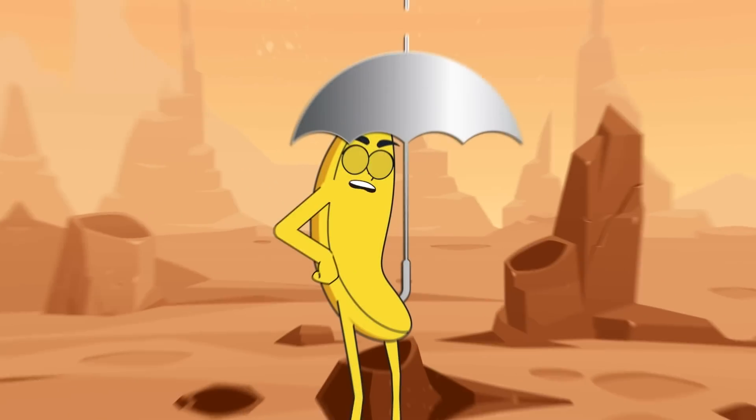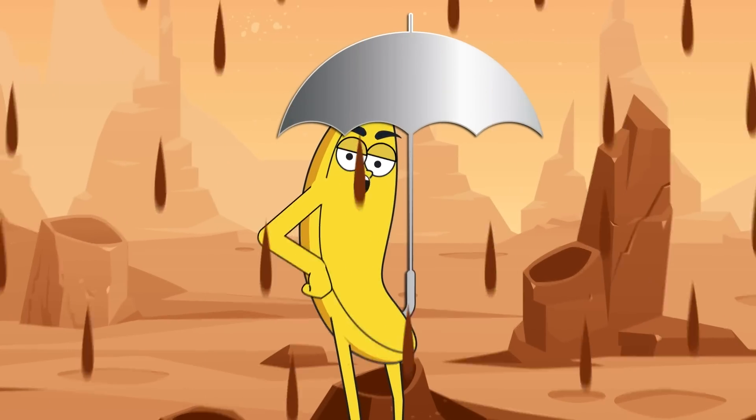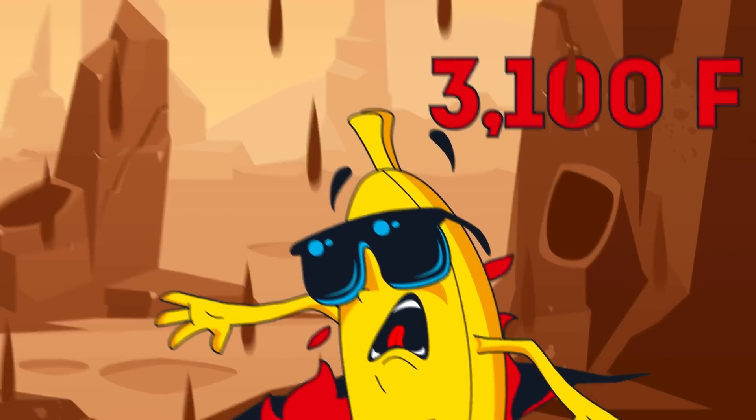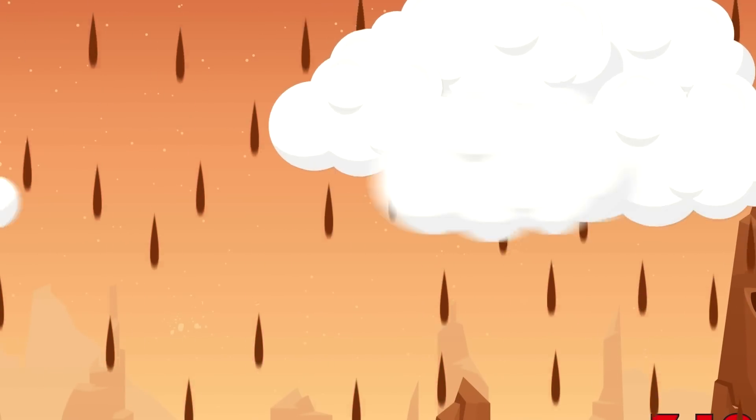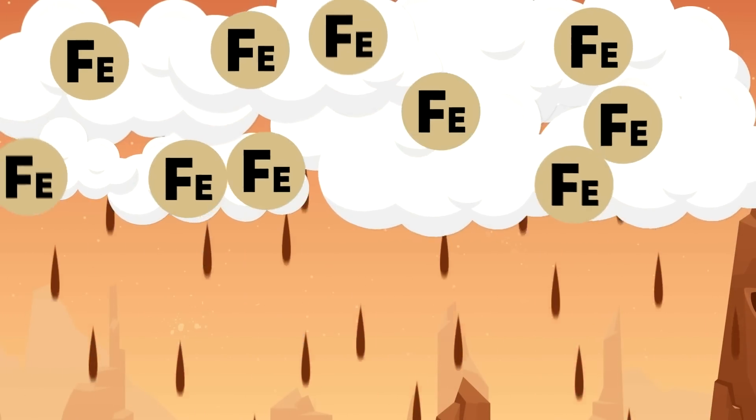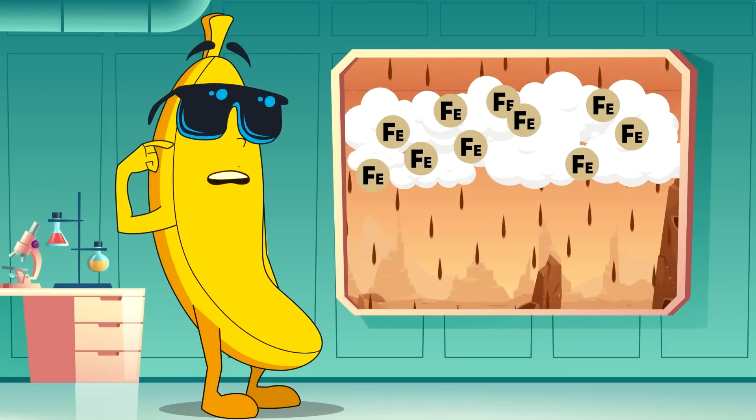The planet is so hot it rains molten iron. Its surface is baked to a temperature of 3,100 degrees Fahrenheit. Its upper atmosphere is theoretically just right to form clouds, not of water vapor, but of iron atoms. So the weather is pretty exotic.